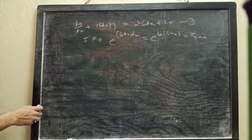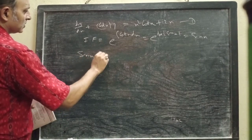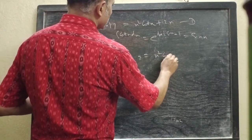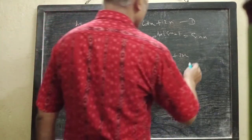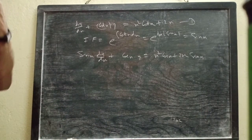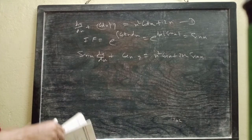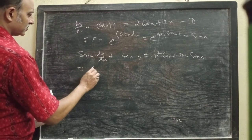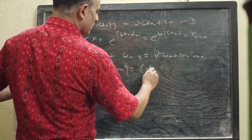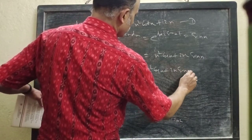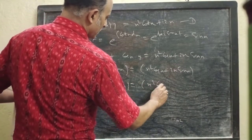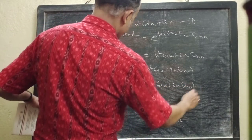Multiplying both sides by sin x, we get sin x × dy/dx + cos x × y = x² cos x + 2x sin x. The left hand side can be written as d/dx of [y × sin x] = x² cos x + 2x sin x. Then d of [y sin x] = (x² cos x + 2x sin x) dx.